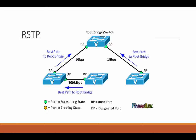RSTP works by adding alternative ports and backup ports compared to STP. These ports are allowed to immediately enter the forwarding state rather than passively waiting for the network to converge. RSTP bridge port roles include a root port, which is a forwarding port that is closest to the root bridge in terms of path cost — essentially the best path to the root bridge.